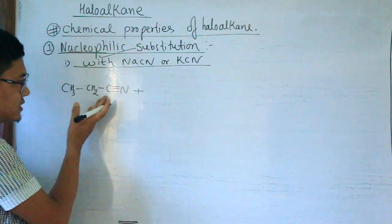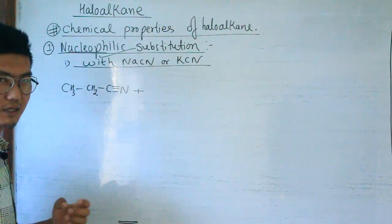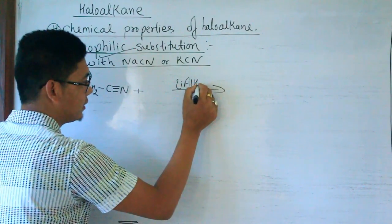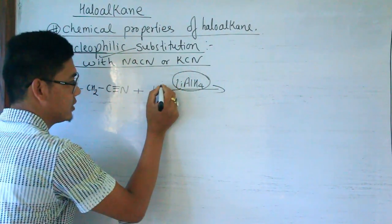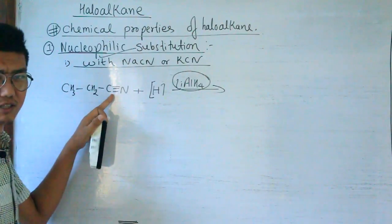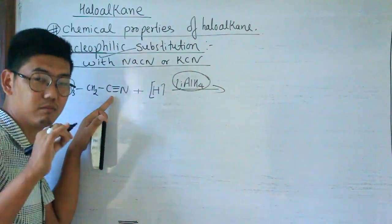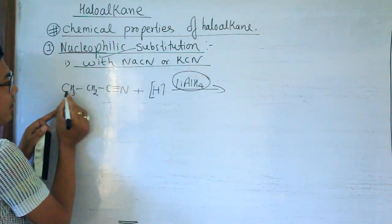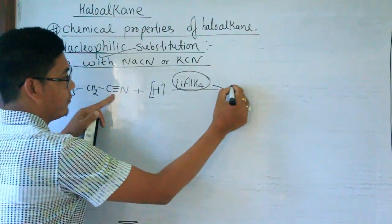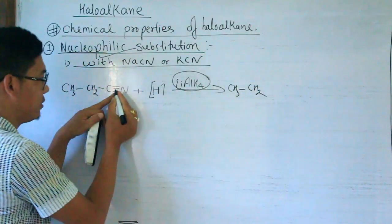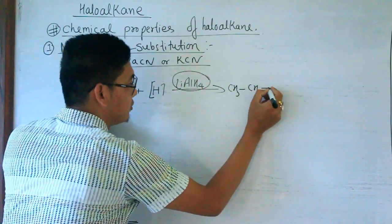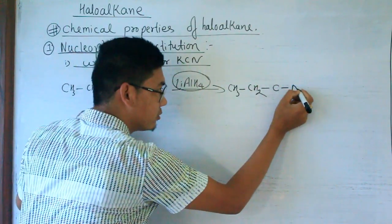Ethyl cyanide (CH₃CH₂C≡N) has a triple bond, so it is unsaturated. It can undergo addition reactions. We can also do a reduction reaction using lithium aluminium hydride (LiAlH₄), which is a good reducing agent that provides nascent hydrogen. Adding hydrogen across the unsaturated triple bond saturates it.